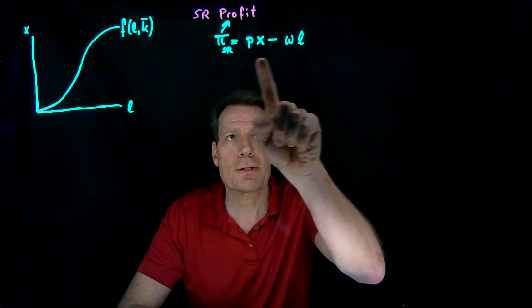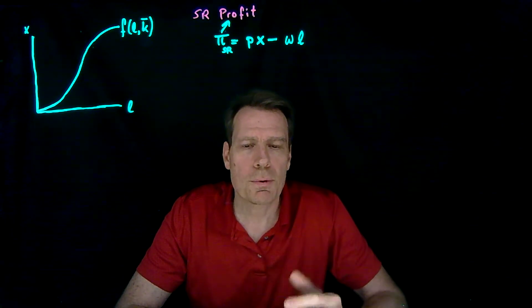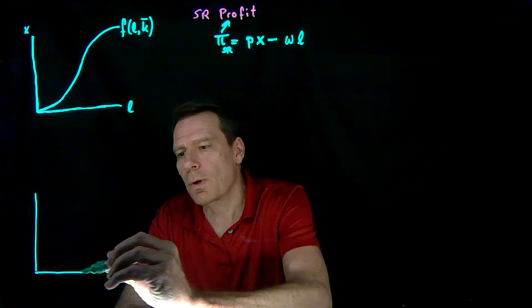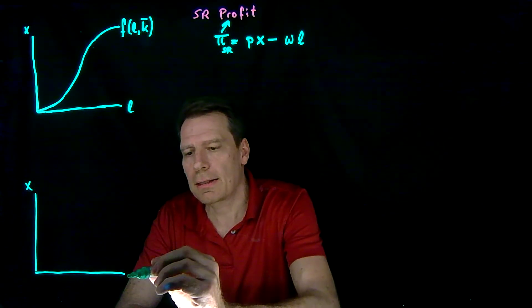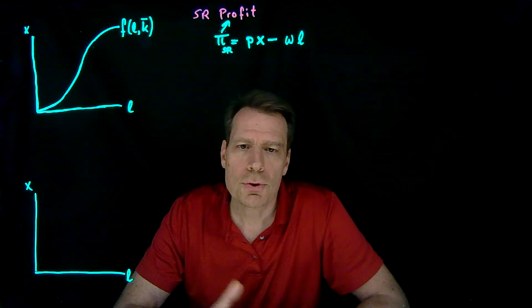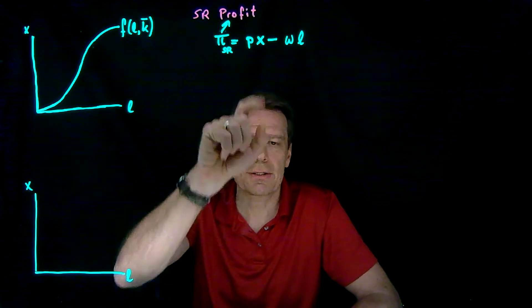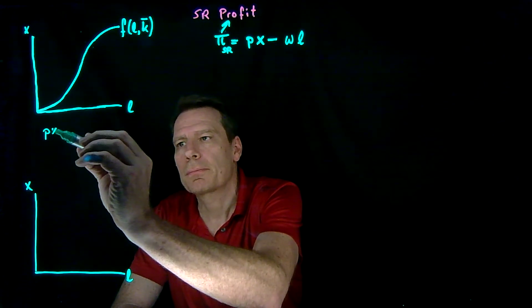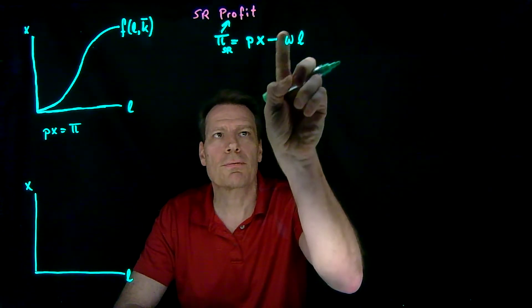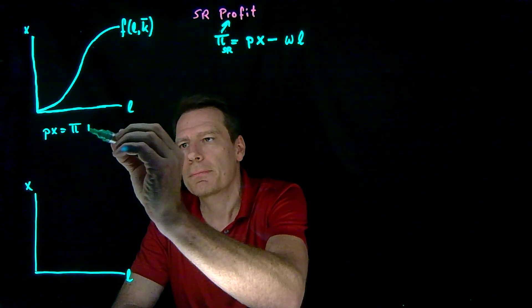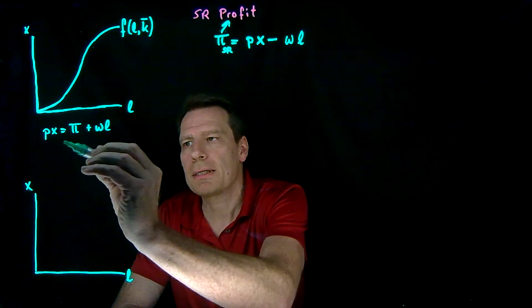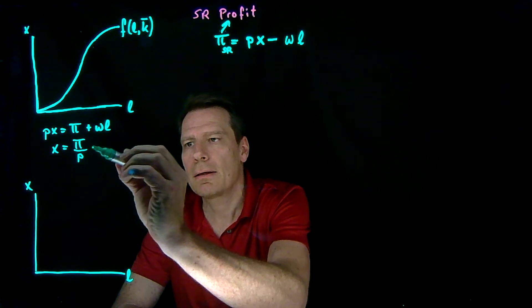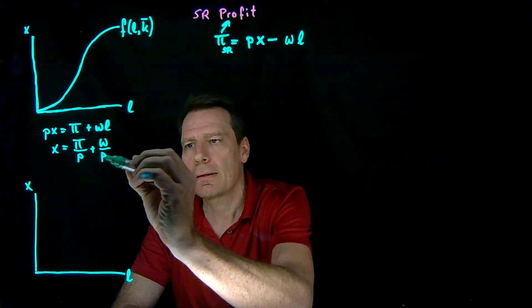Now when you look at this equation, that's the equation of a line. But we want to place that line in this picture where we have x on the vertical axis and labor on the horizontal axis. To do that, we have to solve for x to get it into the slope-intercept form. We'll keep the px on one side and then get rid of the wL by adding it to both sides. Then we'll divide by p to get just x. So x is equal to profit divided by price plus w over p times L.